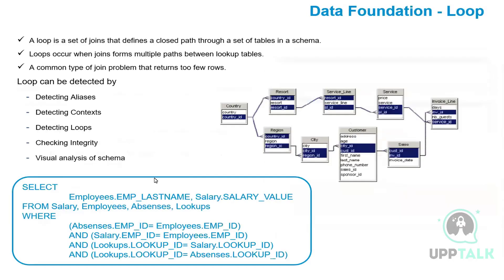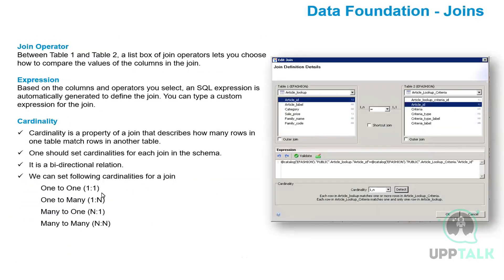The cardinality types for a join are: one to one — if one row matches only one row; one to many — one to N; many to one — N to one; and many to many — N to N.